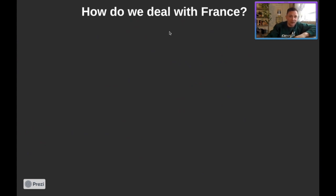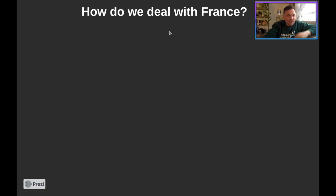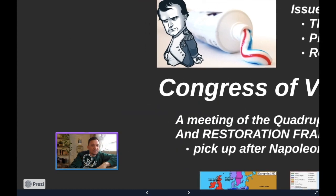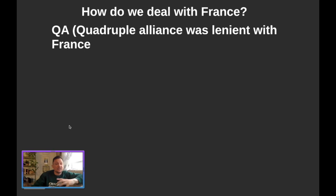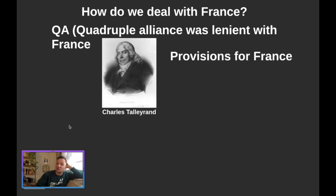Going into it, how do you deal with France? They formerly controlled the Confederation of the Rhine, had occupational forces inside German lands, took over all of northern Italy, and created the Duchy of Warsaw — basically Poland 2.0. What do you do with them? Ironically enough, they were actually pretty lenient on France. None other than Charles Talleyrand is the guy that goes to the Congress of Vienna and represents Restoration France.